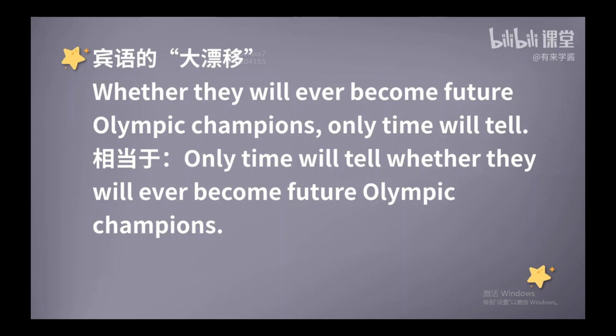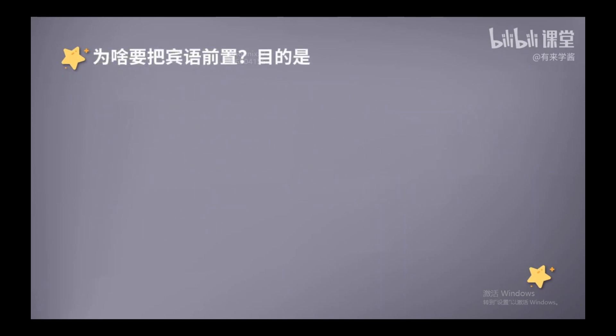我请问大家，如果按照正常的英文语序应该如何表达呢？对了，应该这样说：Only time will tell whether they will ever become future Olympic champions. 只有时间能做出判断，他们是否能成为未来的奥运冠军。那么为什么这句话当中把宾语调到了前面呢？这是不是一个语法错误呢？其实这是一种特殊的宾语前置的现象，本来在谓语后面的宾语，飘移到了主语的前面，目的很简单，就是要突出宾语所要表达的内容和信息。